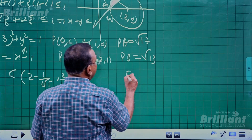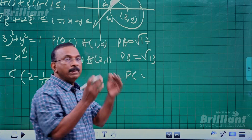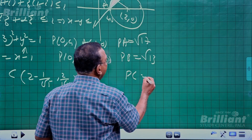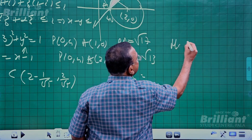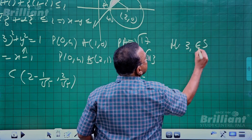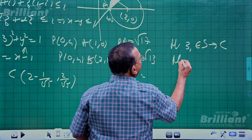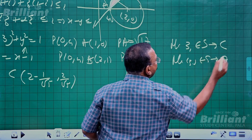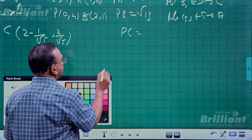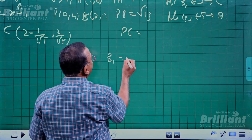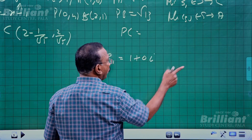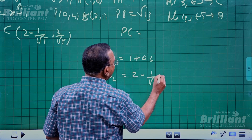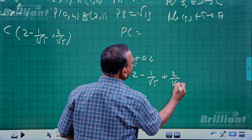PC gives the minimum recording distance from P. So the minimum value corresponds to z₁ ∈ S at point C, and the maximum value corresponds to z₂ ∈ S at point A. Thus z₁ = 1 + 0i, the point at A, and z₂ = (2 - 1/√5) + (2/√5)i.